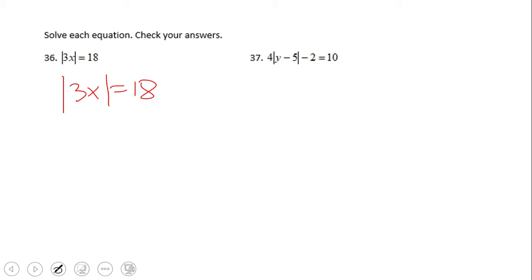Don't forget, an absolute value equation you have to break this original absolute value equation into two separate equations. The first one: 3x equals 18. The second one: 3x equals negative 18.